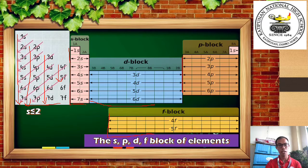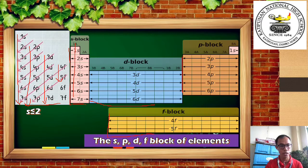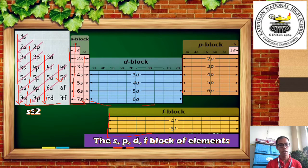To repeat: s can hold a maximum of 2 electrons. Looking at the s block, all elements belonging to group 1A have an s1 configuration, and all elements belonging to group 2A have an s2 configuration — so the s block is full at s2. For the p block, it can hold a maximum of 6 electrons.